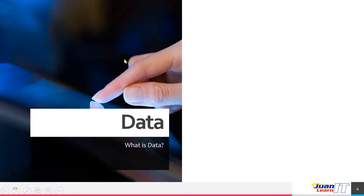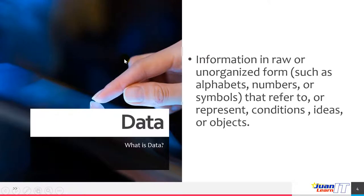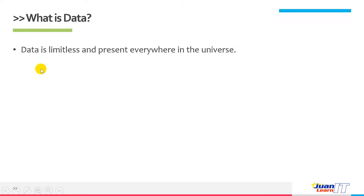Let's start with the definition of data. We already defined data during our first video lecture. Data is defined as the information in raw or an organized form, such as alphabets, numbers, or symbols that refers to or represent conditions, ideas, or objects. Data is limitless from the definition — it has no meaning and is present everywhere in the universe. Wherever you go, data could be there.